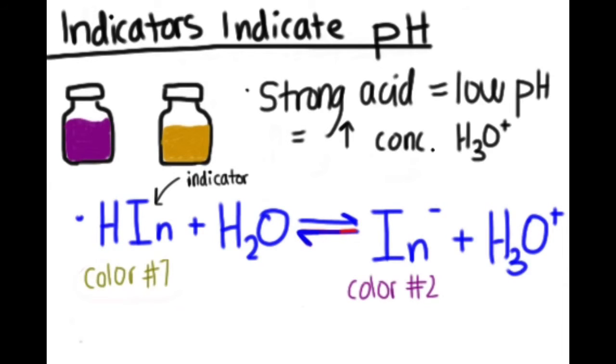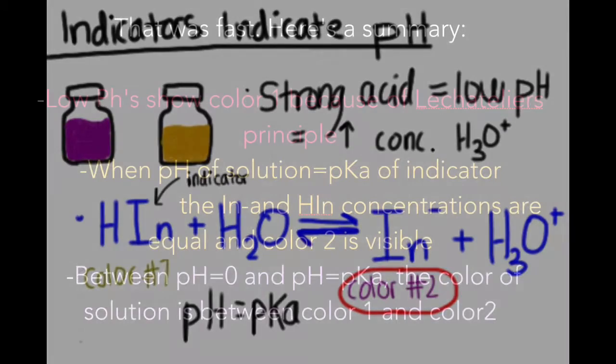As the pH increases, the color of solution will be between color one and color two, until the concentration of HIN is equal to the concentration of IN-, and the pH of the solution is equal to the pKa of the indicator, when color two will finally show.